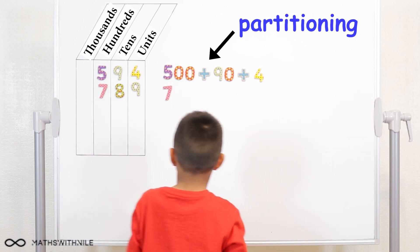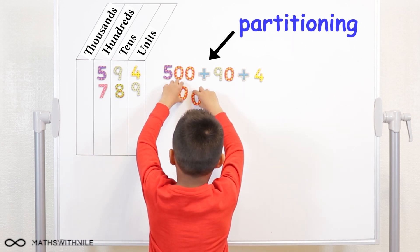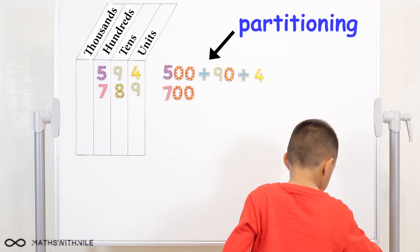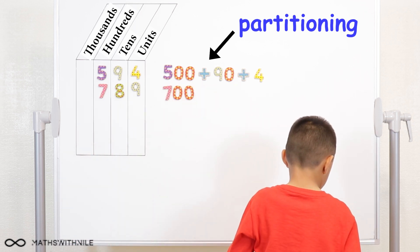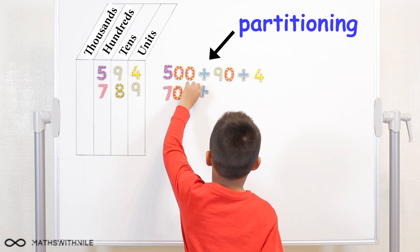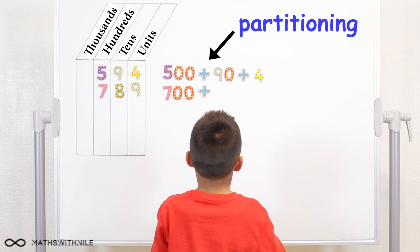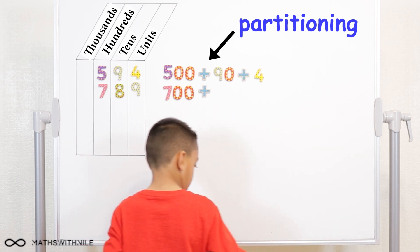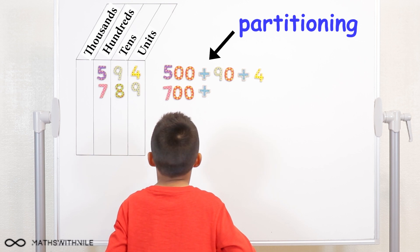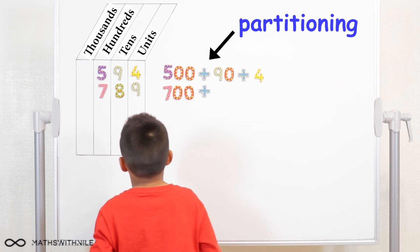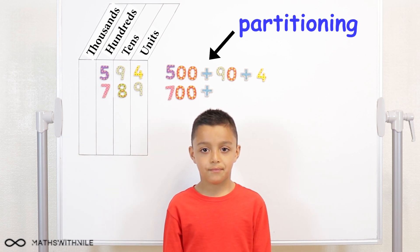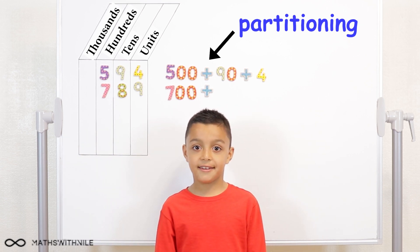Seven hundred. And see if you can find an addition sign somewhere — I'll need two addition signs. Can we discuss that first? The eight — what's the value of the eight? Eight tens. And eight tens is equal to what? Eighty.